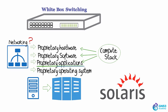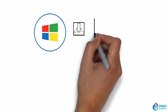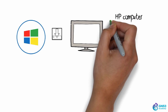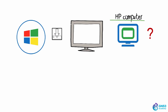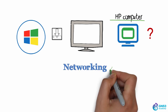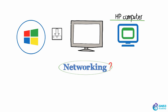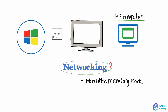You could write an application for Microsoft Windows, install it on a Dell computer today, and then next week move it to an HP computer, or even to a virtual machine. So why aren't we doing that with networking? Why in networking do we still have a monolithic proprietary stack instead of using open standards?